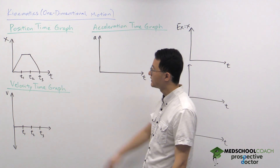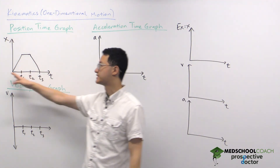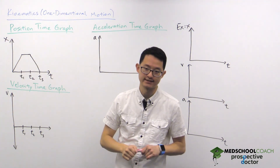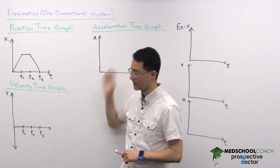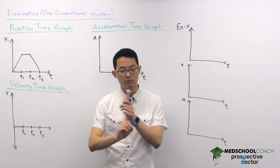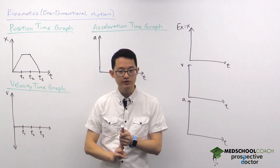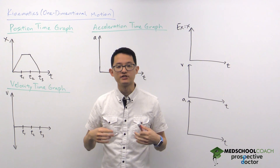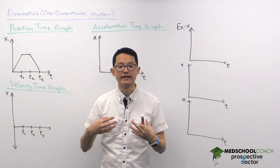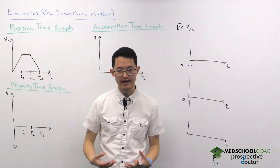We're starting with the position-time graph, where we have position as the y-axis and time as the x-axis. For all these different types of graphs, you need to be able to do two things: number one, read the graph to understand what's going on; and number two, extract specific pieces of information that are included in the graph.